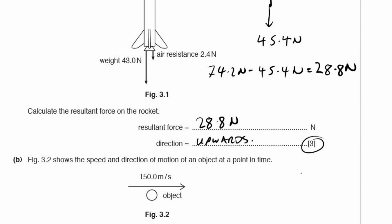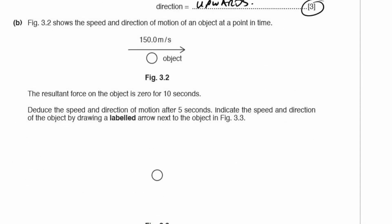It's another three-mark question, so there are marks available for working out. Always show your working out. If you don't show your working out, you're going to lose 20% of the marks in any of these exams — and that's just for writing the equations. If you're getting marks for working out, that could go up to 40%, 50% or higher.